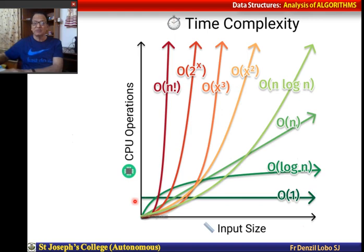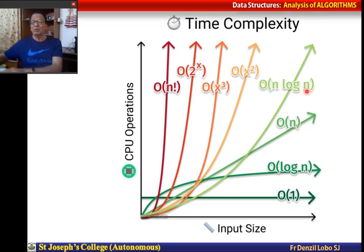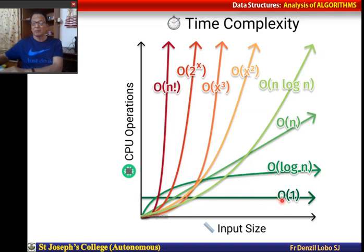If the order is 1, the function is flat. Log n increases a little then flattens. Order of n is linear. Order of n log n becomes more than n as input grows. Then we have order of n squared, n cubed — Big O. Then n to the power n and n factorial. These are not good algorithms as they deviate highly. We prefer algorithms of order 1, log n, n, or n squared.